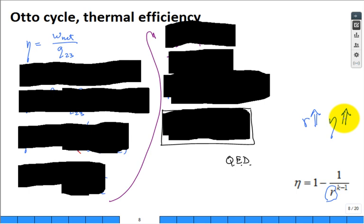That's the bottom line, and we can derive this result. So how am I going to derive this result? Well, here it is. What did we start with? We started with the definition of thermal efficiency: work net divided by Q_in, which is from state 2 to 3.